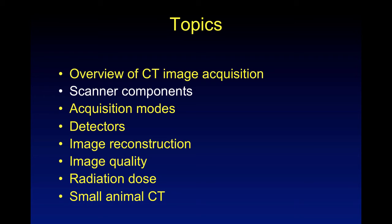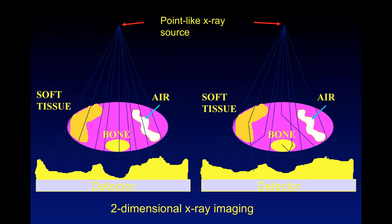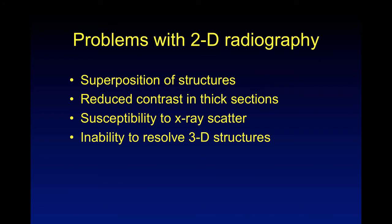Now let's shift gears to CT, which is computed tomography. Unlike MR, which is an inherent proton inside the body, CT is x-ray — this is 3D x-ray imaging. Here's a point-like x-ray source, and from there it goes through the body and is detected. Traditional 2D x-ray imaging does not spatially encode — it collapses all of the signal onto a single thing, so really that's just looking at bone. When you do CT, you can see soft tissue structures, organs, and bone. Problems with 2D radiography: you get a superposition of structures, reduced contrast in thick sections, the x-rays will start to scatter, and you can't resolve 3D structures.